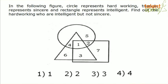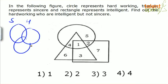Now let's look at the second type of Venn diagram question. In the following figure, circle represents hardworking, triangle represents sincere, and rectangle represents intelligent. Find the hardworking who are intelligent but not sincere. This is similar to set theory. In set theory, each category is represented with circles — we find regions showing combinations like sincere and hardworking, hardworking and intelligent, all three together, and so on.